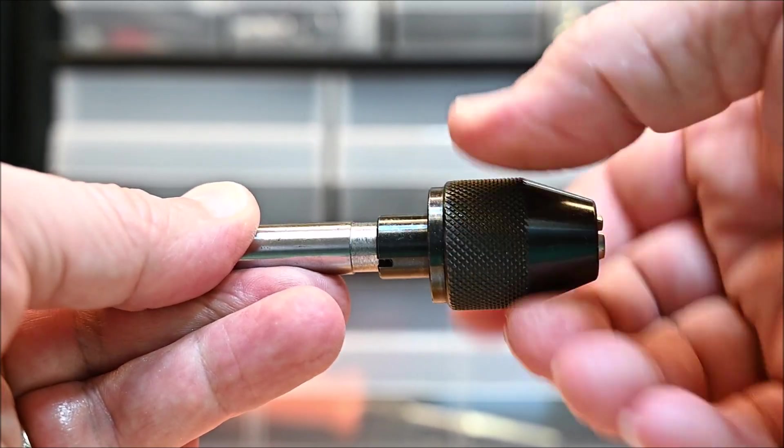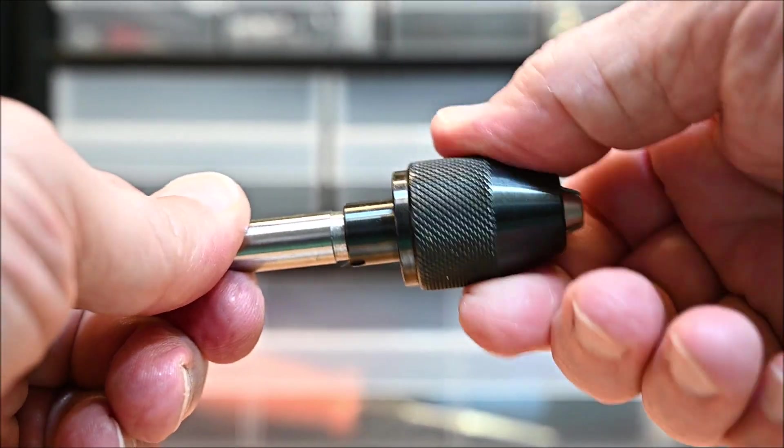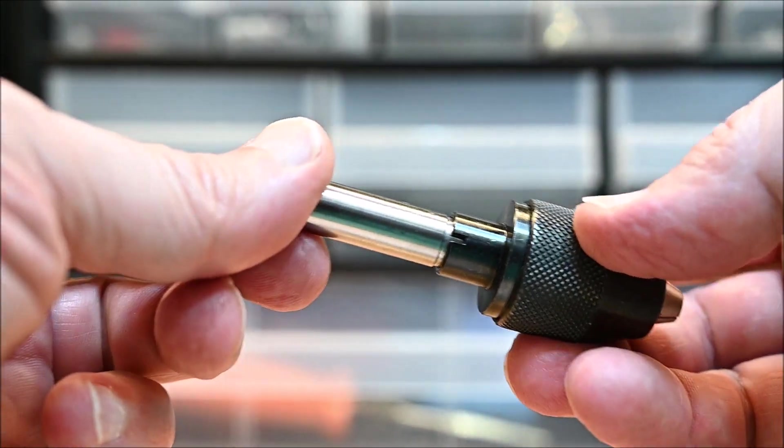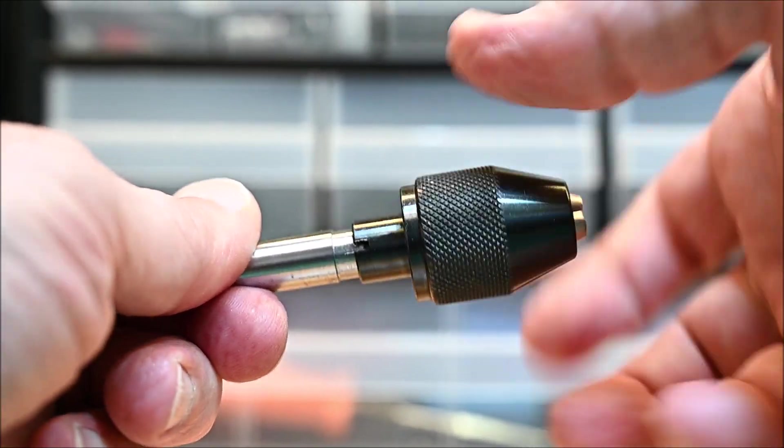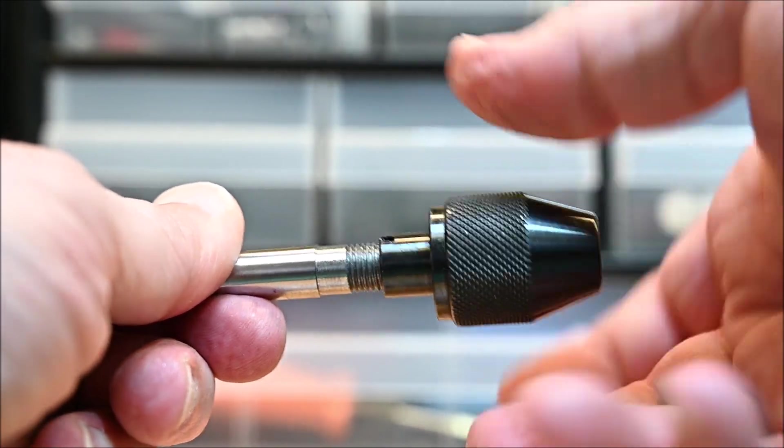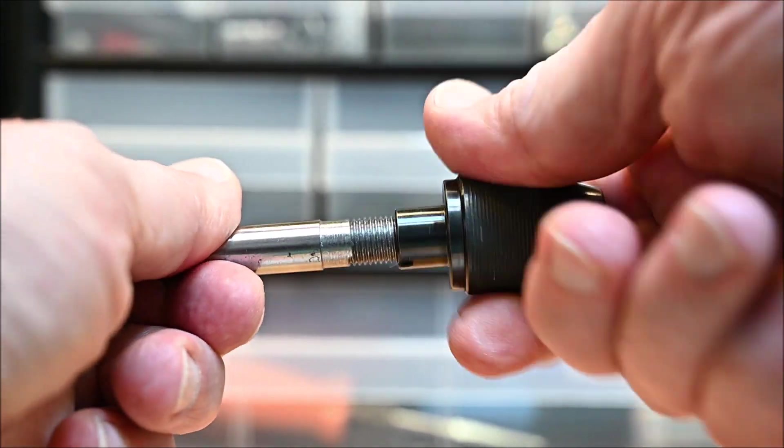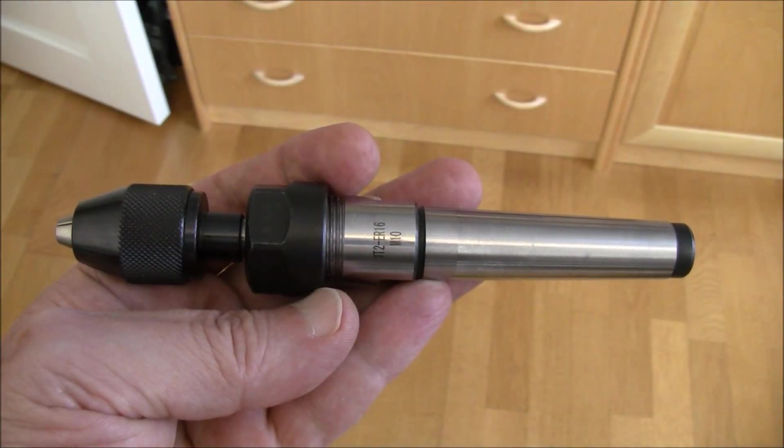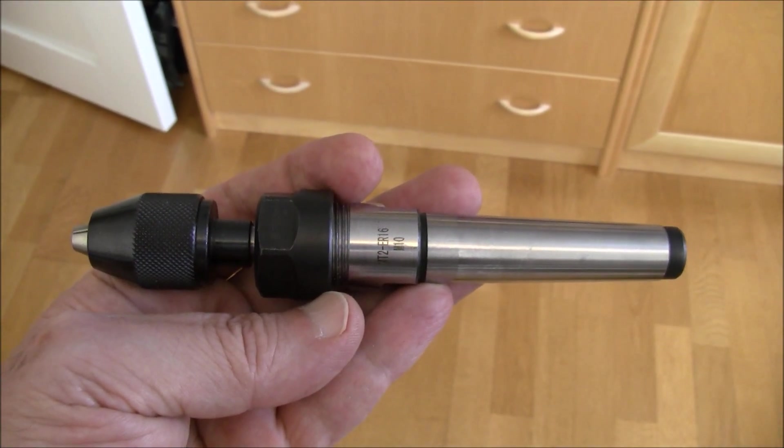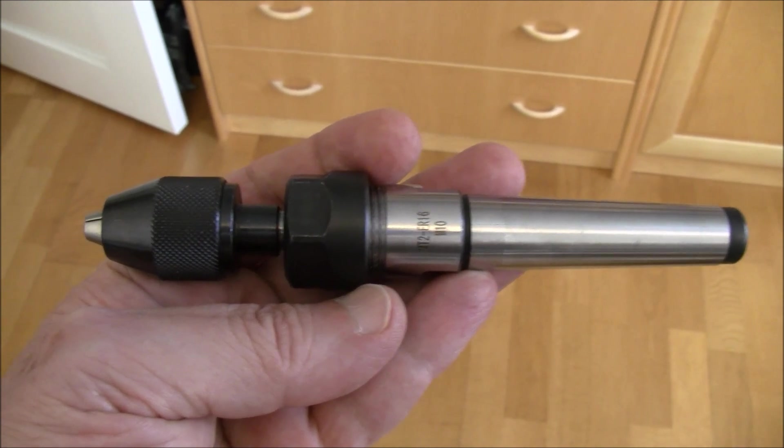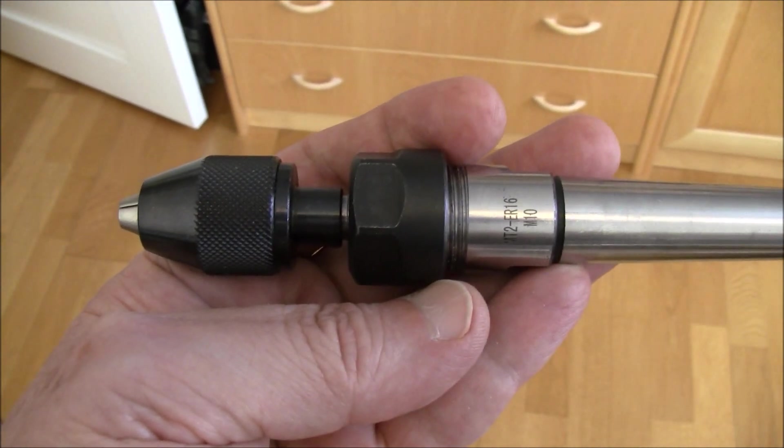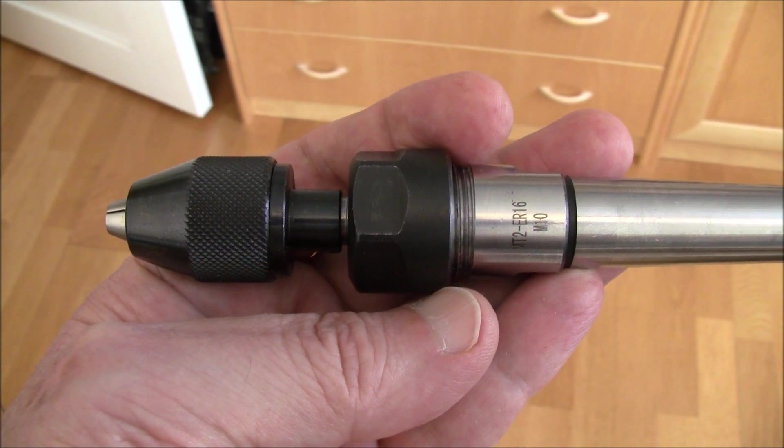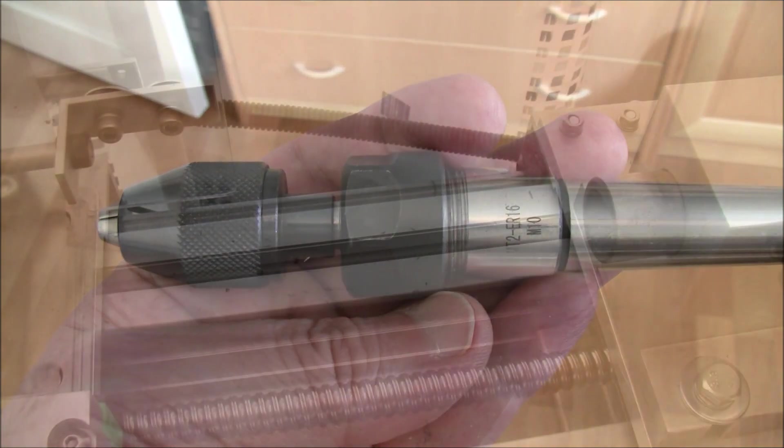And it actually fits perfectly. I didn't have to do anything to correct the threads. It was perfect the first time, which is quite unbelievable. But it's the truth. My main intention with this chuck adapter was to be able to use this mini chuck on my lathe also. The mini chuck came with a hexagon adapter, so it was not possible to use it in a lathe. But now I can do it easily.